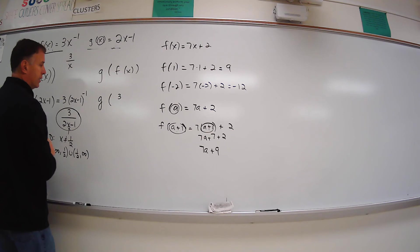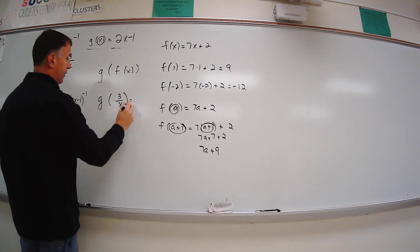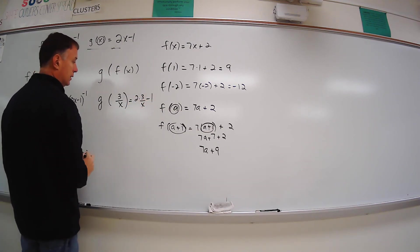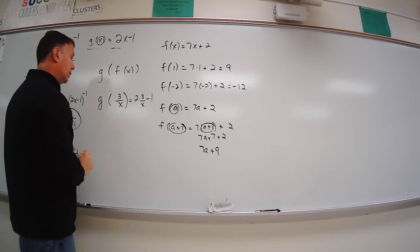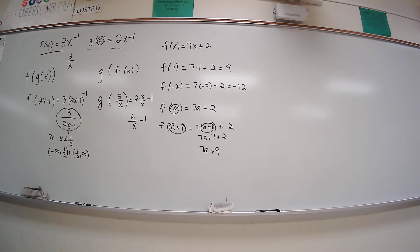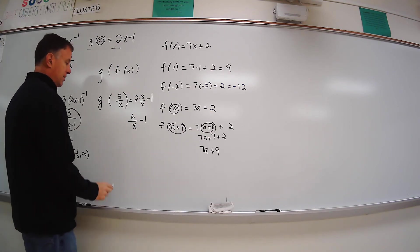So I'm going to find g of 3 over x. So that means I'm going to have 2 times 3 over x minus 1. So that's going to be 6 over x minus 1. So there's my function. Let me see if they rewrite that. No, they leave it like that. So let's think of our domain.